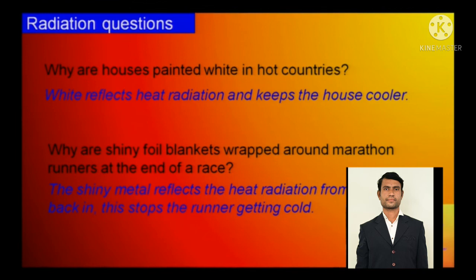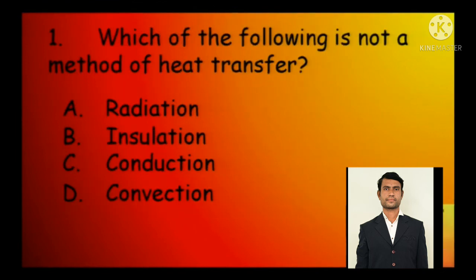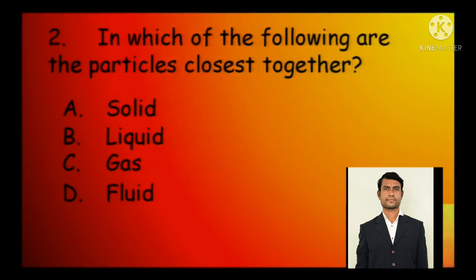Let us have these multiple choice questions. Which of the following is not a method of heat transfer? Radiation, insulation, conduction and convection and it is pretty sure that it has to be B, insulation. Insulation is a kind of material that does not have free electrons. That has free electrons but they have more stable electrons than the unstable ones. In which of the following are the particles closest together? So it has to be solid.